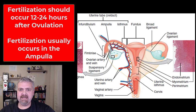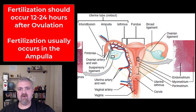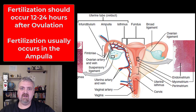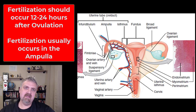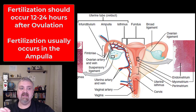Probably the key thing to note here is that fertilization, if it is going to occur, should generally occur 12 to 24 hours after ovulation. That means the sperm should meet the egg and fertilize it somewhere in the ampulla of the uterine tube — that's where it normally occurs, though it doesn't have to be exactly 12 to 24 hours.